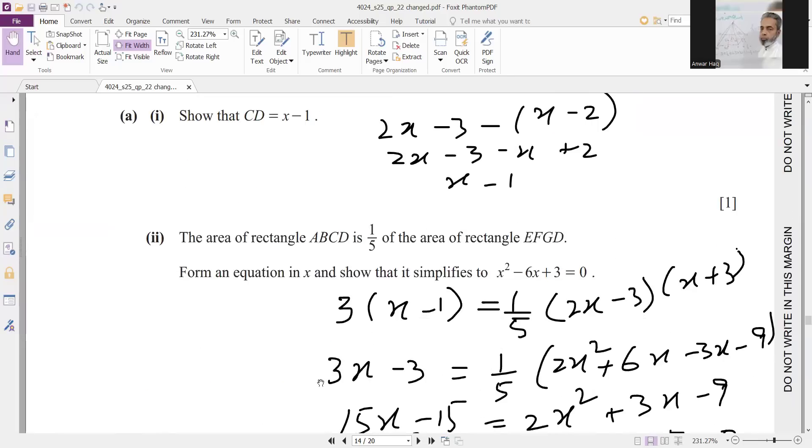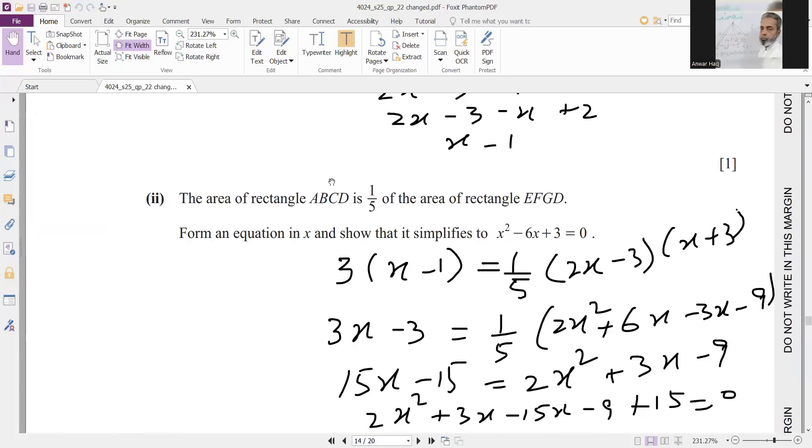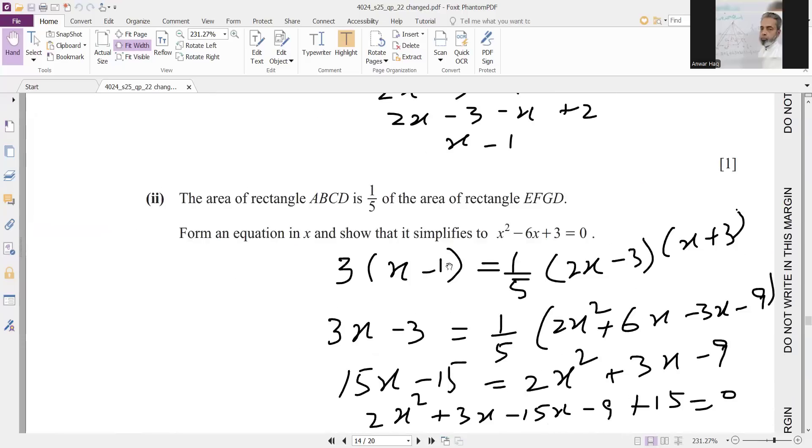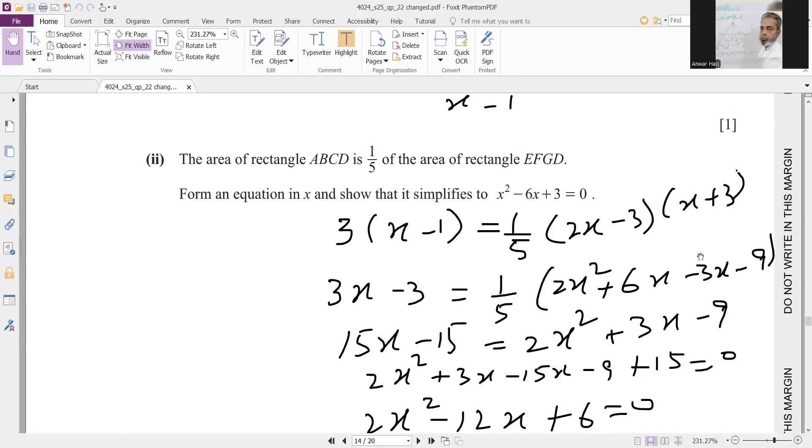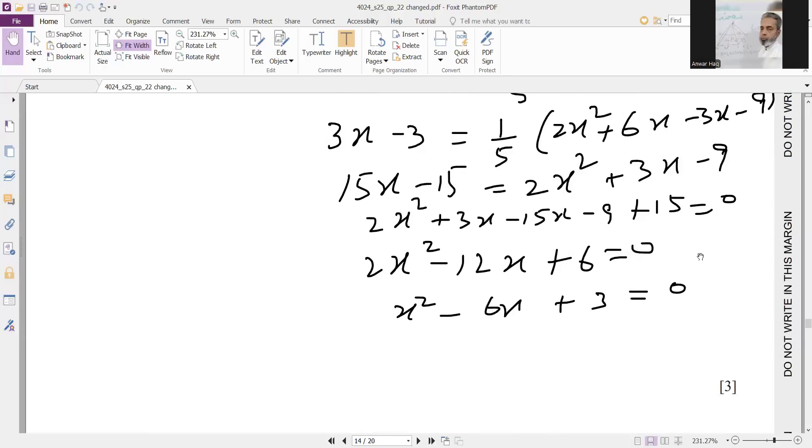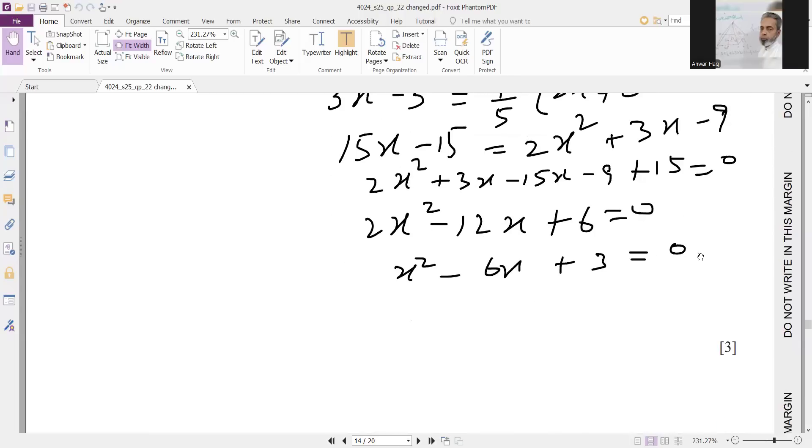Then the area of rectangle ABCD is 1 over 5 of the area of EFGD. So area of rectangle ABCD from the figure is 3 into x minus 1 equals 1 over 5 the area of the big rectangle. After removing brackets and simplification, you will get x square minus 6x plus 3.